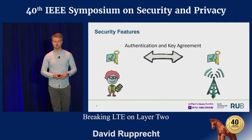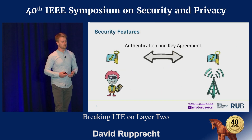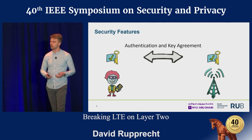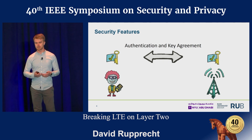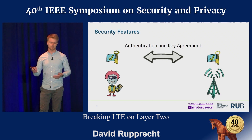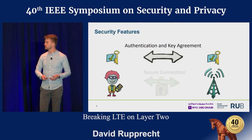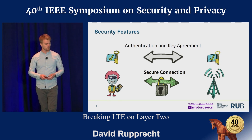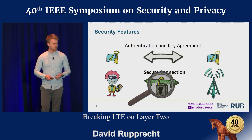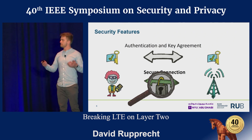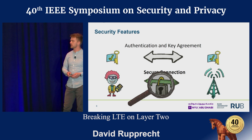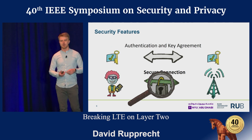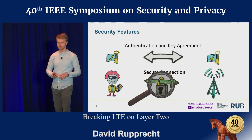To reach these security aims, we have a first initial authentication and key agreement protocol that establishes mutual authentication between your phone and the network, and also a common key. This common key is used for ongoing security measures and secures the connection. Today we want to take a closer look at what kind of security is implemented in these secure connections — in particular where it is implemented and what security measures are in place.